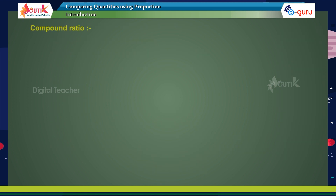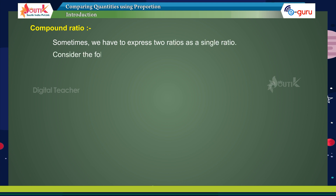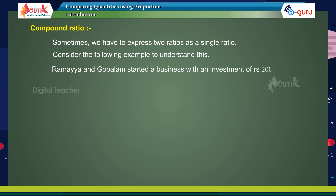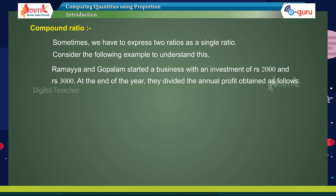Compound ratio: sometimes we have to express two ratios as a single ratio. Consider the following example. Ramayana and Gopalam started a business with investments of rupees 2,000 and rupees 3,000. At the end of the year they divided the annual profit as follows: ratio of investments equals 2000 is to 3000, which equals 2 is to 3.